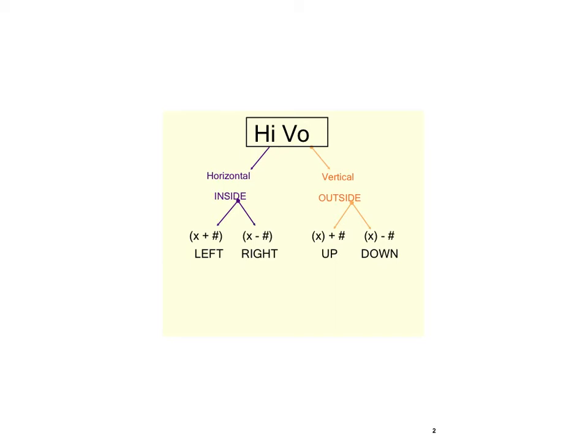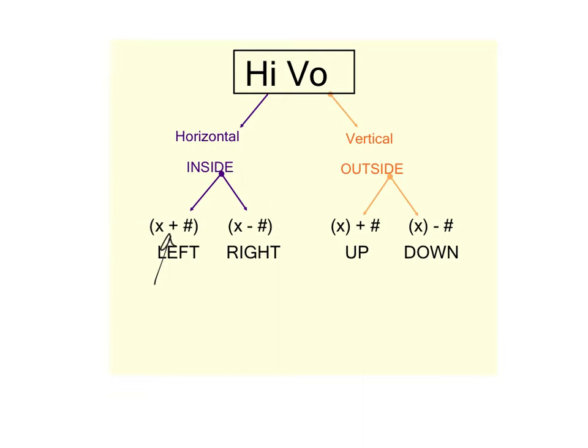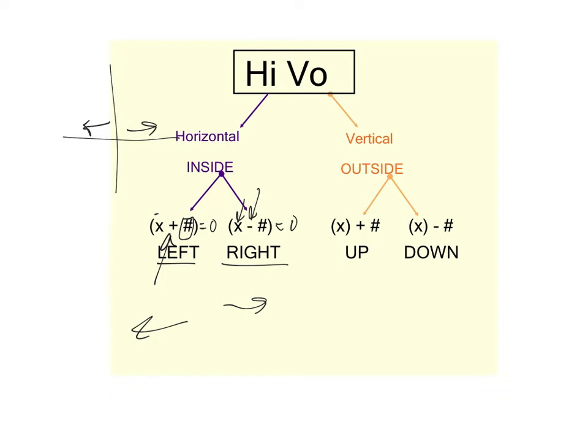Just a reminder — this was in lesson 1 as well — but when we add inside the parentheses, that means we're going to the left. When we subtract inside the parentheses, that means we're going to the right. If you think about it: if we want the expression to be 0, we'd need x to be a negative number if we're adding to it to get 0, and negative numbers on a coordinate grid go to the left. If we're subtracting a number to get 0, we'd need x to be positive, so that goes to the right. It seems a little backward that adding moves you left and subtracting moves you right.